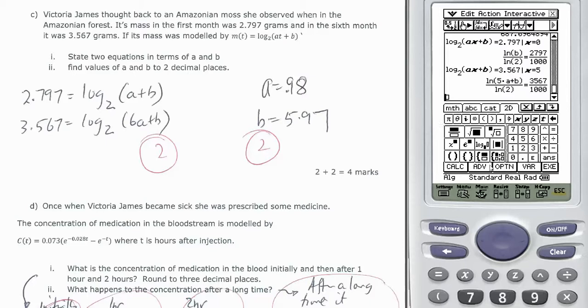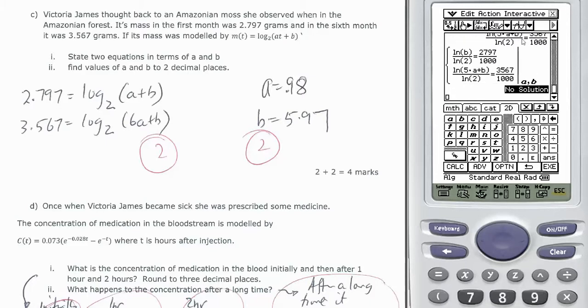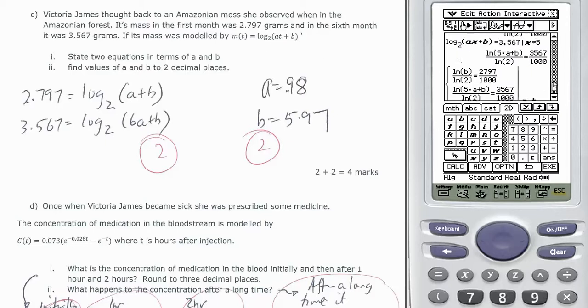I can open up my simultaneous equations drop this in there, drop this in there and solve it for a and b. And I don't get a solution. Now the problem that I think I have is that I made my first month t0 and my sixth month t5 and it doesn't give me a solution.